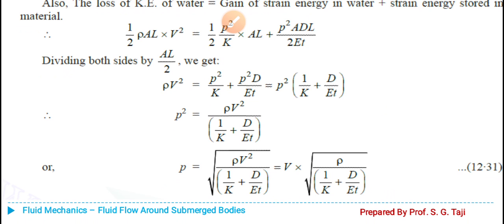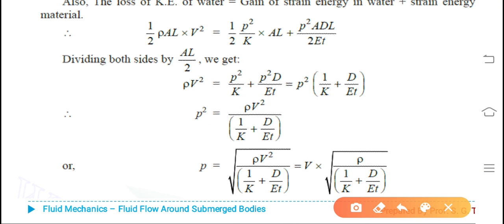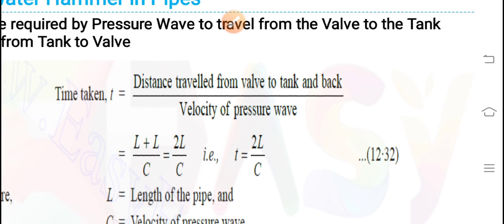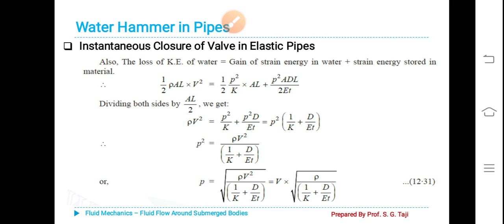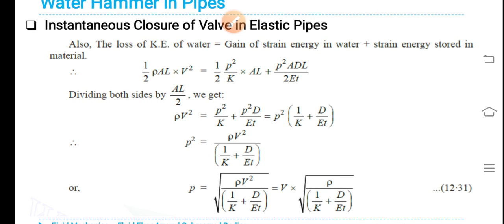So p² equals ρv² divided by [1/K + D/(Et)]. Therefore p equals v multiplied by the square root of ρ divided by [1/K + D/(Et)], where t is the thickness, E is the modulus of elasticity of the pipe material, D is the diameter of the pipe, K is the bulk modulus of elasticity of the fluid, and p is the pressure rise.